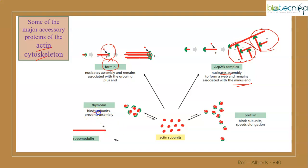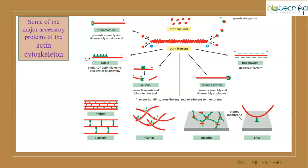Thymosin will bind to the subunits and prevent assembly - here subunits means G-actin, the globular form, the monomeric form which forms dimer, trimer, and finally the filament form of actin. Profilin will bind to subunits and help in elongation of the protein.